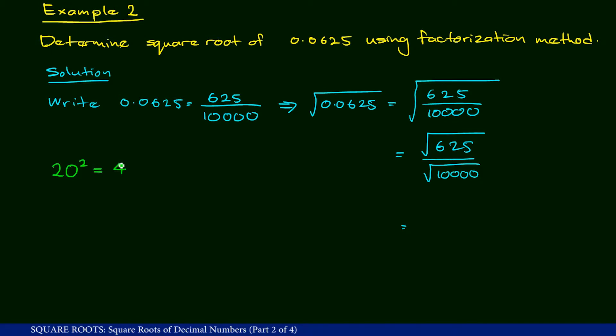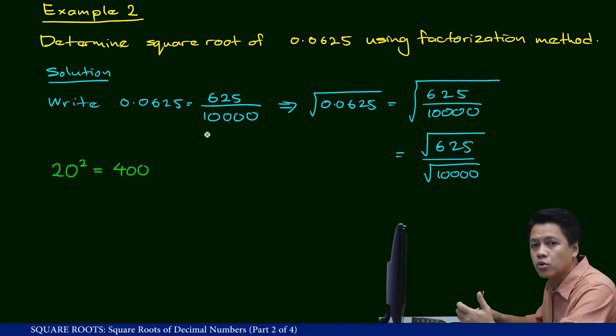20 squared is 400. Well, 400 is less than 625. So the square root of 625 must be more than 20.